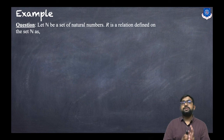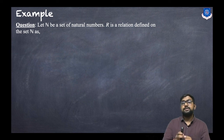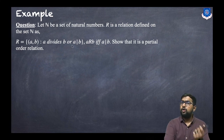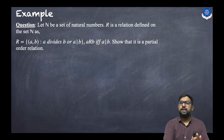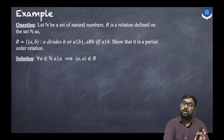Now let's discuss an example. Let capital N be the set of natural numbers, and R is a relation defined on N as the set of all (a, b) such that a divides b. So a is related to b if and only if a divides b. Show that this is a partial order relation.